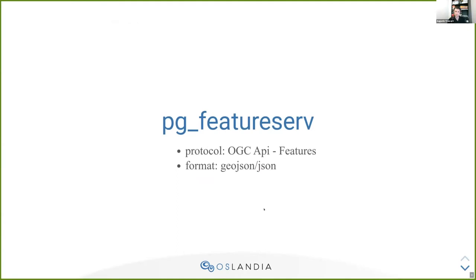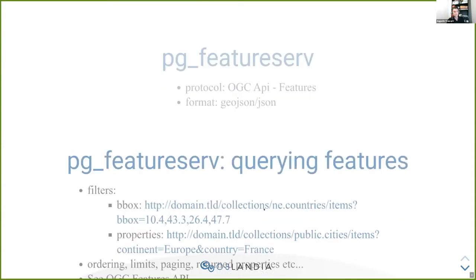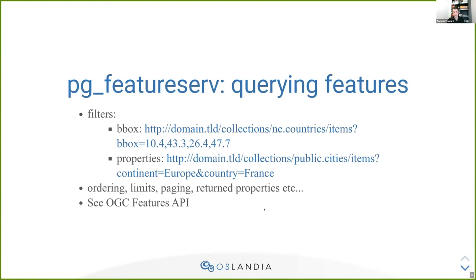On the other hand, PGFeatureServe implements part of the OGC API Features protocol. The format of the data is GeoJSON if you have geometry data in the result set, or JSON otherwise. So I won't do a complete presentation of the OGC Features API, but here are some examples of how you can query your dataset: you can filter by bounding boxes, by property values, and also do some ordering, limit the number of results, limit what properties are returned, do some paging, etc. For PGFeatureServe, the granularity is not the tile — it returns a set of features that you have queried according to the criteria, with no geographical tiling constraint.